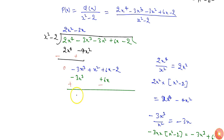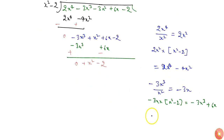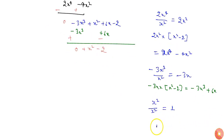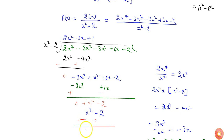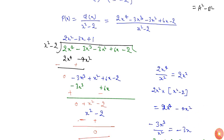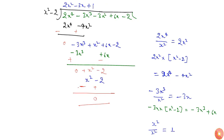Writing -3x³ + 6x and changing signs: -3x³ + 3x³ = 0, and 6x - 6x = 0, leaving x² - 2. Dividing x² by x² gives 1. Multiplying 1 by (x² - 2) gives x² - 2. Subtracting: x² - x² = 0 and -2 + 2 = 0, so the remainder is 0. Therefore p(x) = 2x² - 3x + 1.